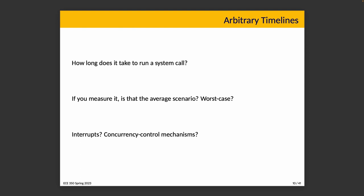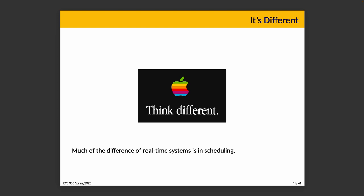A real-time operating system is just different from a general-purpose operating system — the goals, constraints, and priorities are all different. Many scheduling algorithms discussed for general systems are not suitable for real-time systems. Scheduling makes the difference as to whether we actually succeed in meeting all deadlines, which is why we must use appropriate scheduling algorithms.